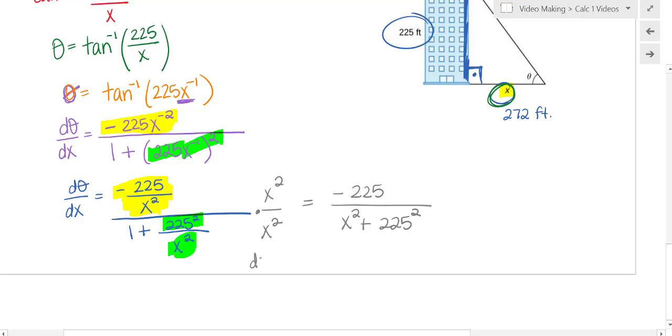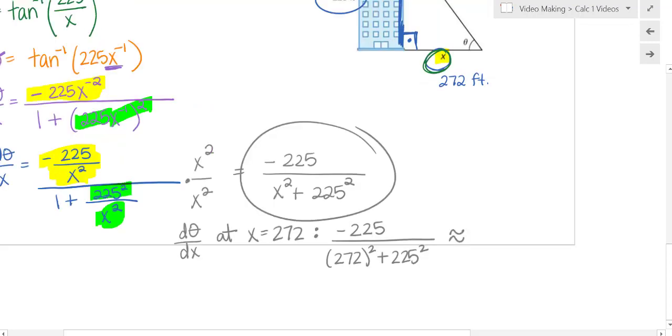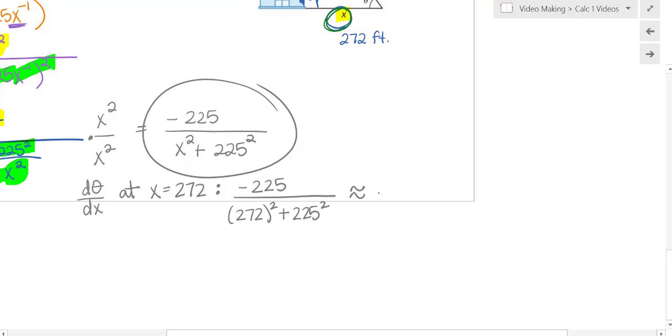Now is when I'm trying to find d theta dx at x equals 272. Now I can put in my x value because this is the rate of change for any x value. So now put in the x value that you want, and this is a very small number. It's approximately negative 0.0018. So depending on how many they want you to round to, and theta is radians, x is in feet. So this is radians per foot. So it is decreasing at that rate.